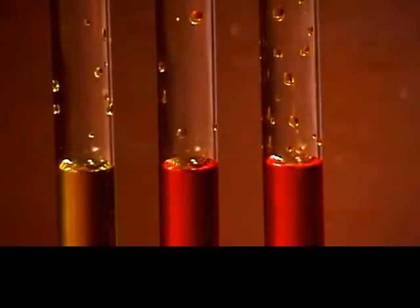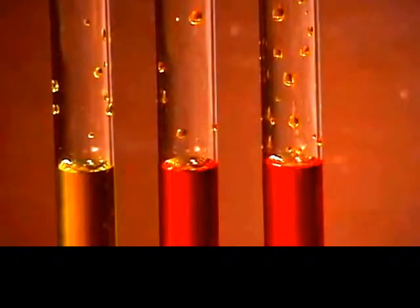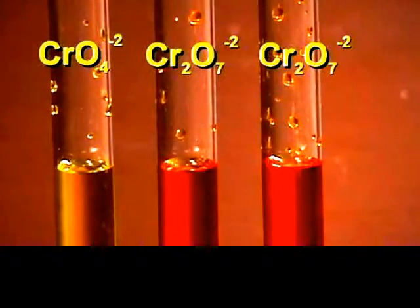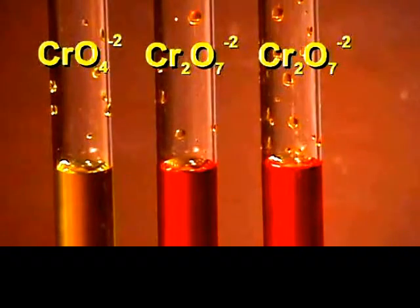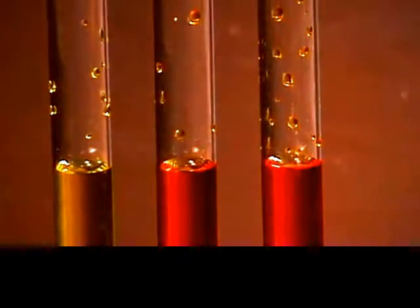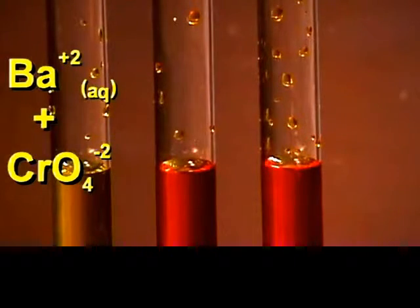We have three test tubes: one containing a solution of potassium chromate, and two test tubes containing solutions of potassium dichromate. We are going to add a solution of 0.1 molar barium chloride to the first tube.